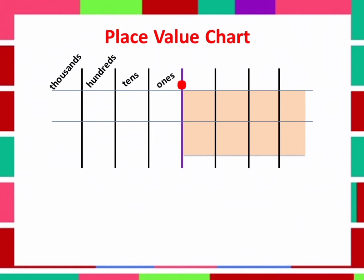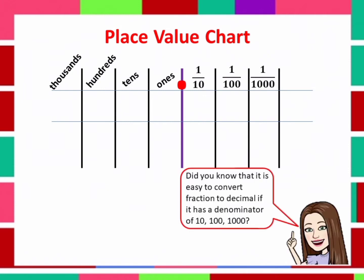So, 1 over 10, 1 over 100, 1 over 1000, and so on. Did you know that it is easy to convert a fraction to decimal if it has a denominator of 10, 100, or 1000?